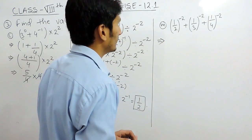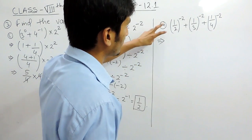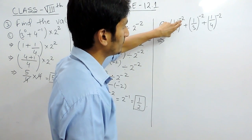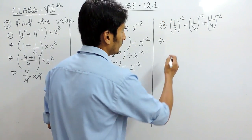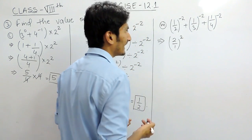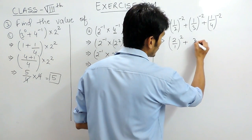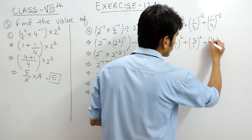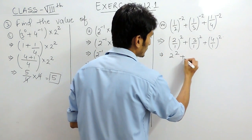For the third part, this is again a question on exponents. As explained in previous videos, when a fraction has a negative power and you want to convert it to positive, you just reciprocate the fraction. So 1/2 raised to power minus 2 becomes 2/1 raised to power 2, then 1/3 raised to power minus 2 becomes 3/1 raised to power 2, and 1/4 raised to power minus 2 becomes 4/1 raised to power 2.